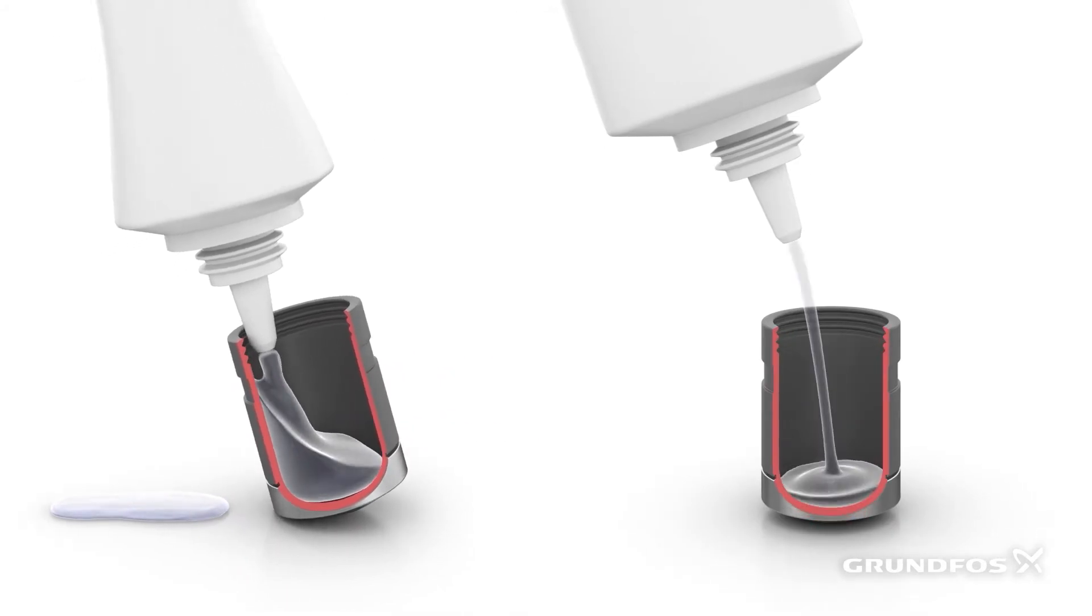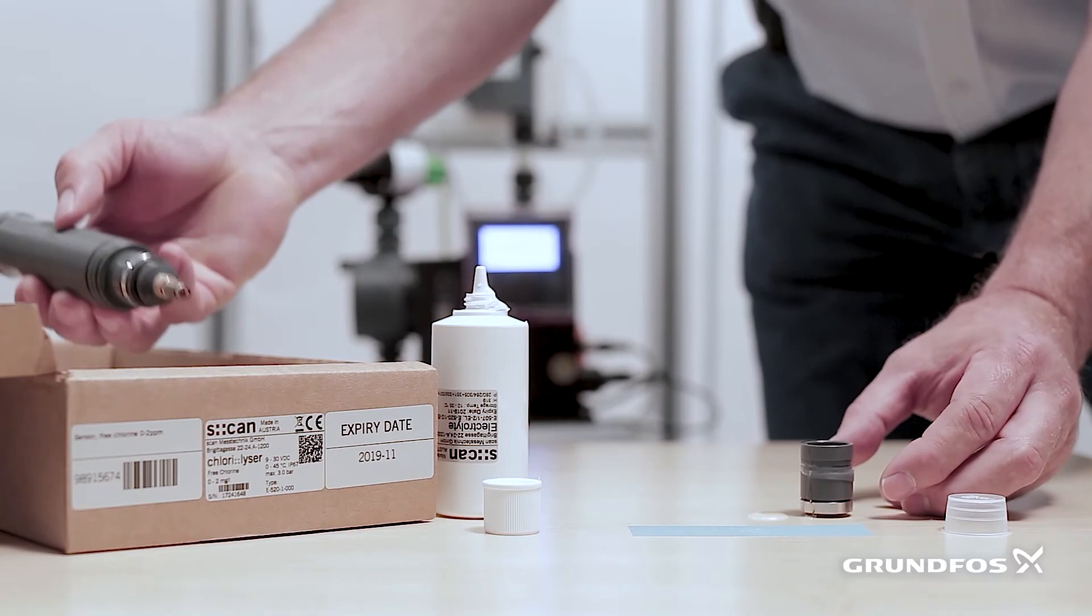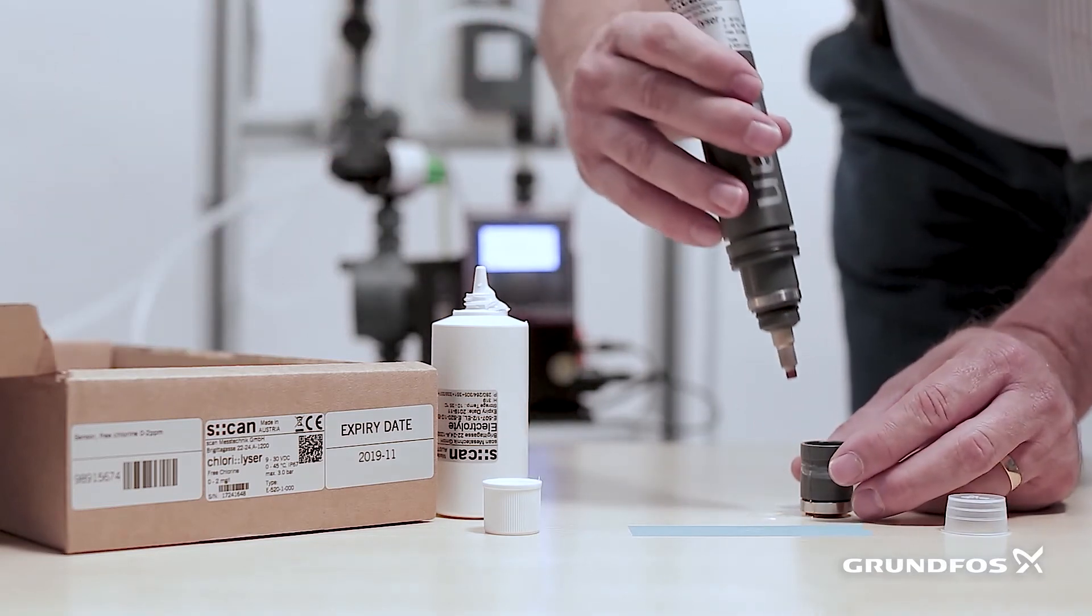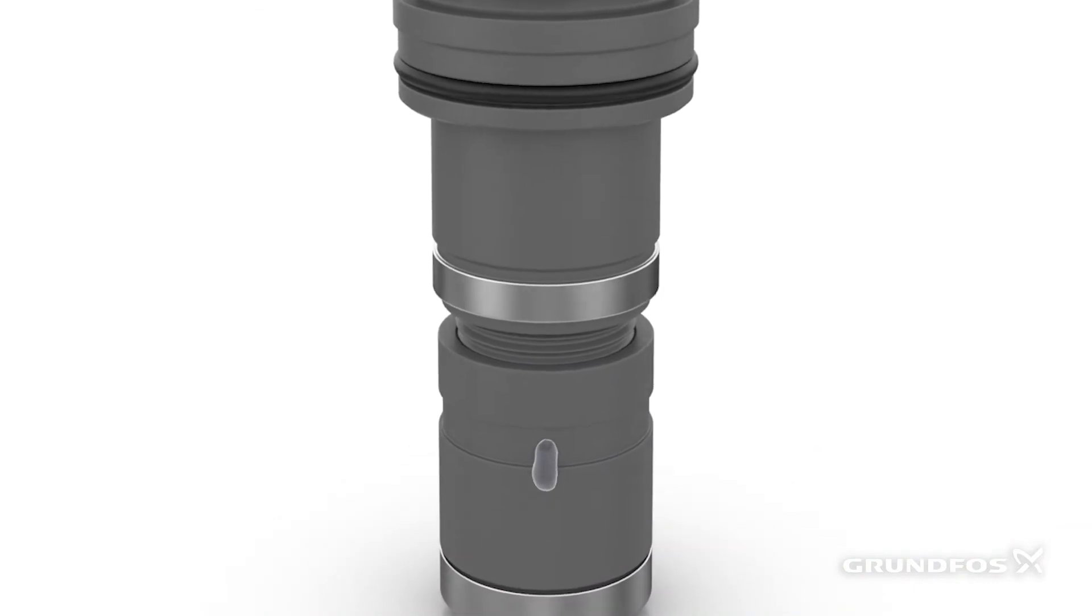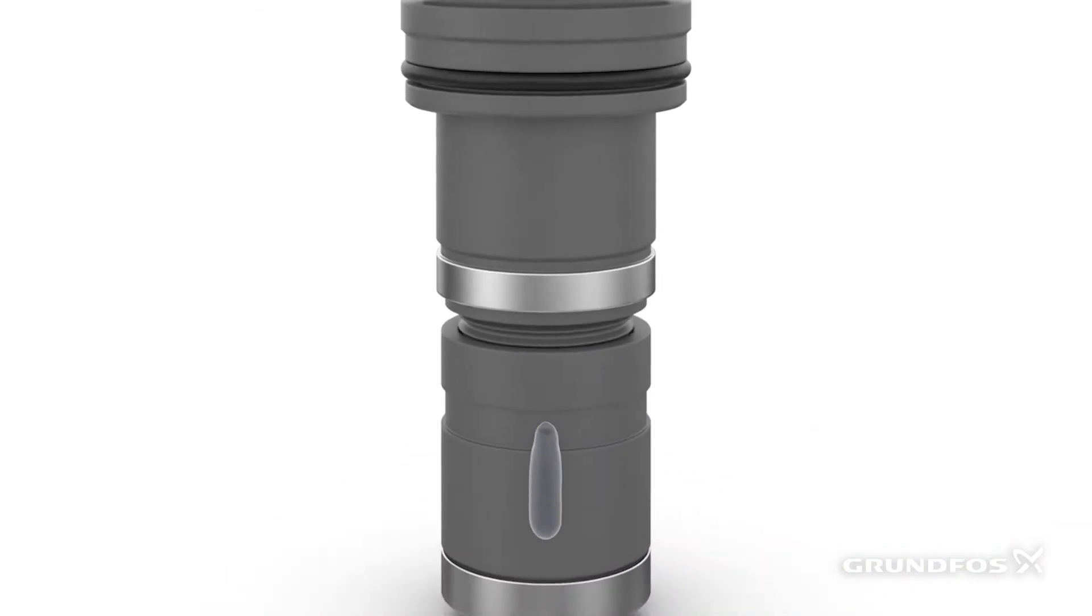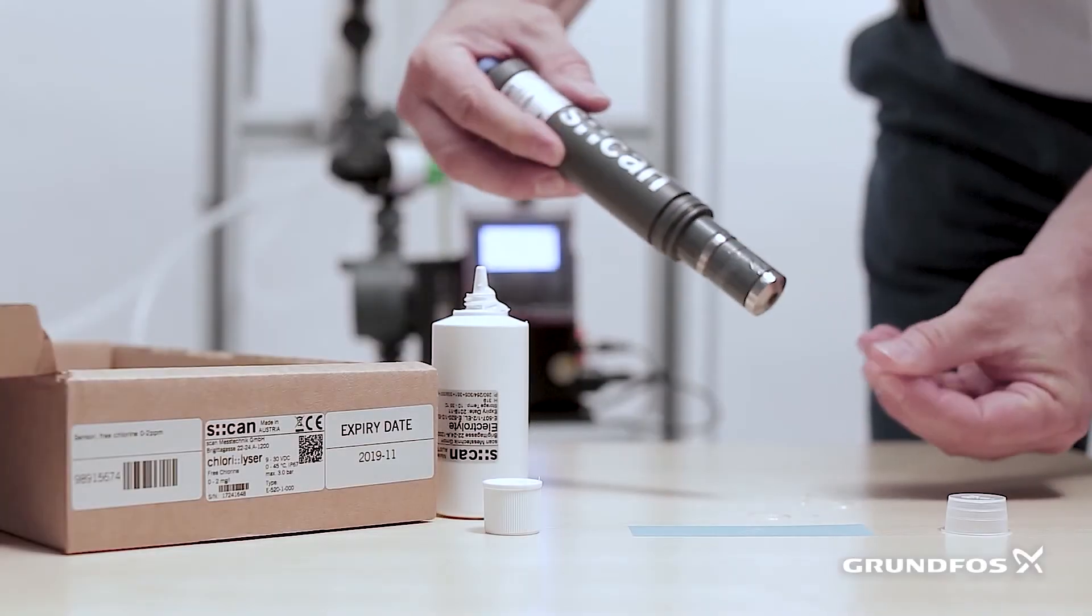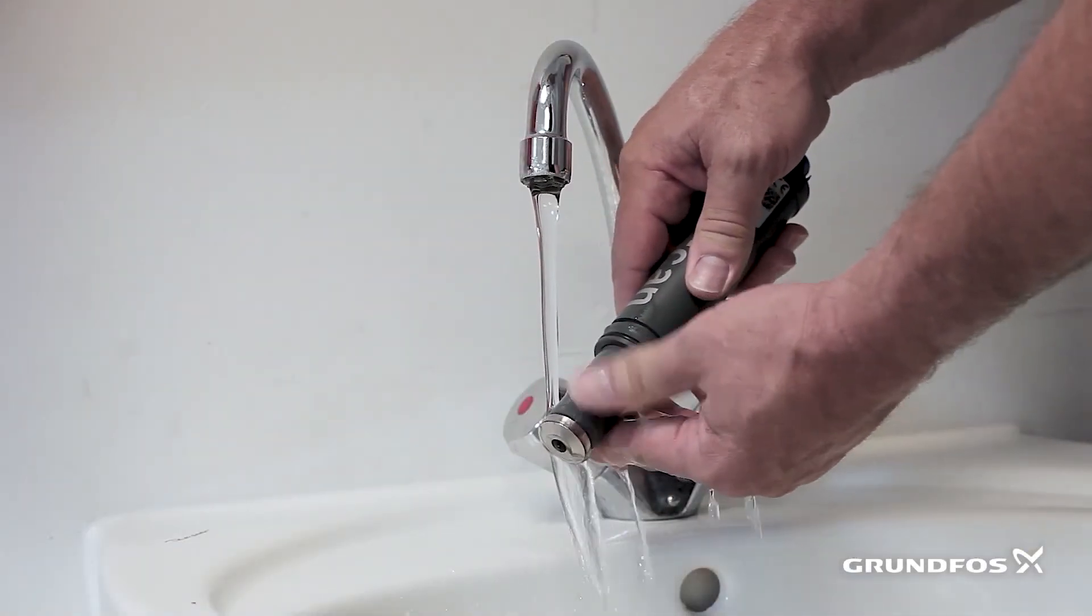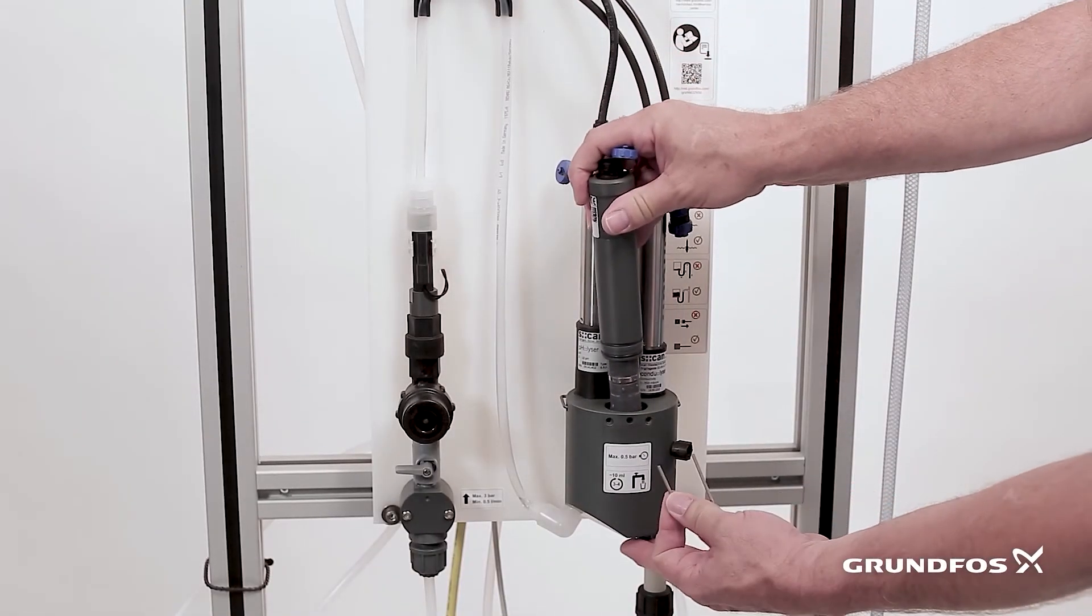As you can see here, our goal is to not introduce air bubbles into the cap. Once full, slowly screw the cap on the sensor without touching the sensor tip with your finger. You'll notice electrolyte will leak out the threading and through the weep hole. Simply wipe off any excess electrolyte and recover the weep hole with a rubber band. Your sensor is now ready to be installed in the flow cell.